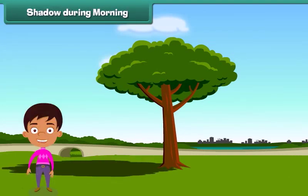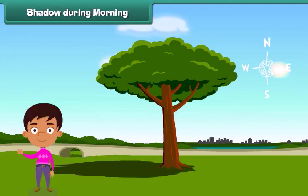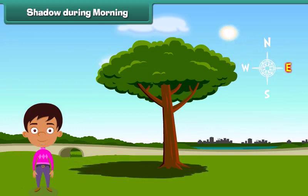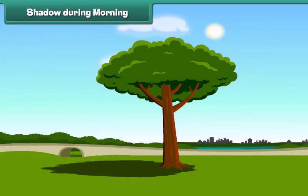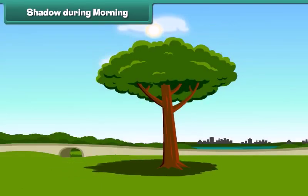As we all know, the sun rises in the east. In the morning, the sun is in the east, so the shadow of the object forms in the west. The length of the shadow changes as the sun moves to its west.